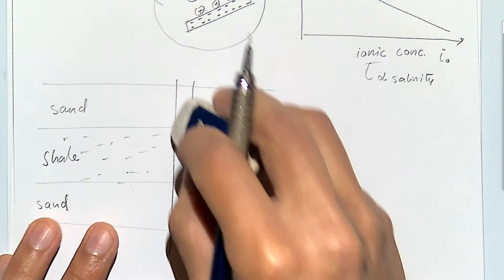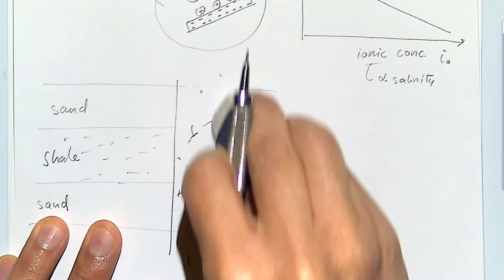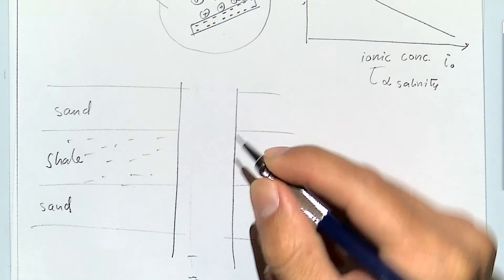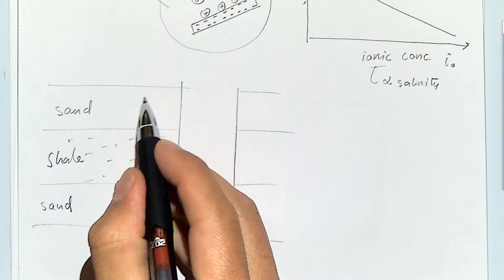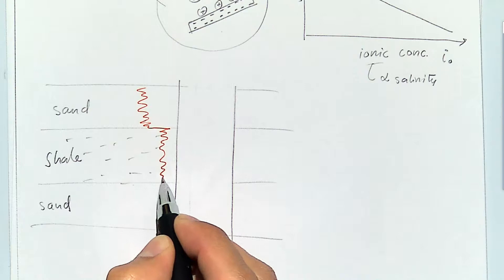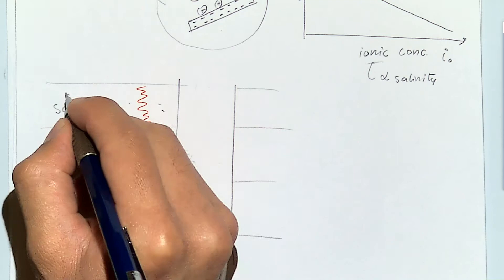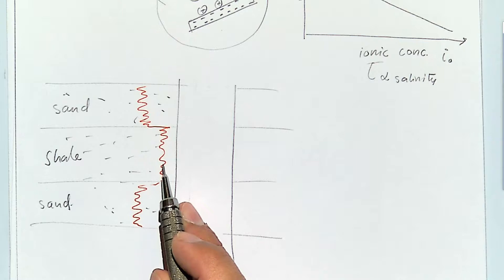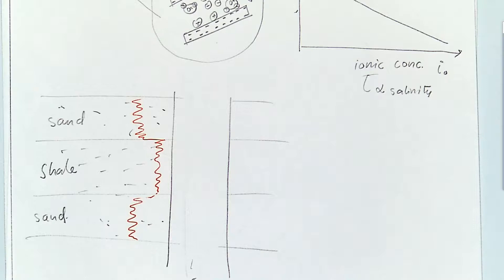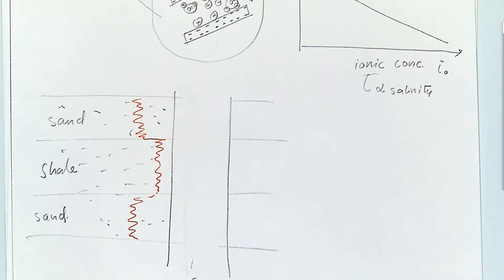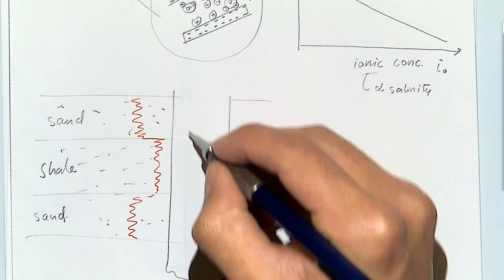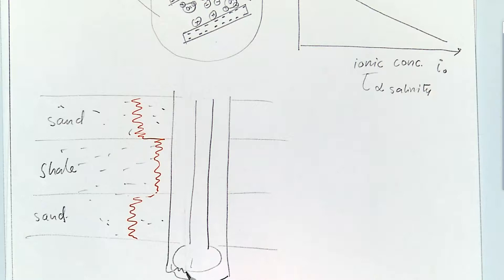It's going to expand. There's going to be an invasion of drilling mud into the formation — it penetrates deeper in the sand because the sand is usually more permeable. But when the fresh water gets into the shale, it lowers the salinity of the brine within the shale. Because of that, the equilibrium spacing between the plates gets larger and as a result the shale swells.